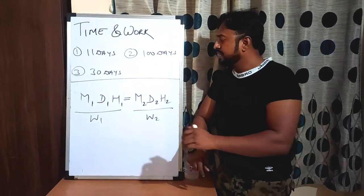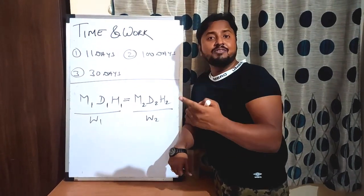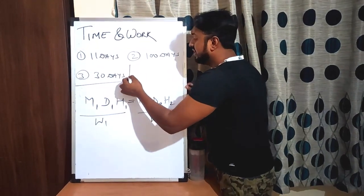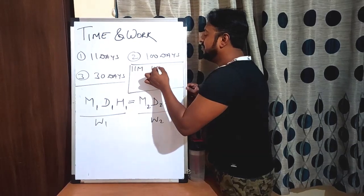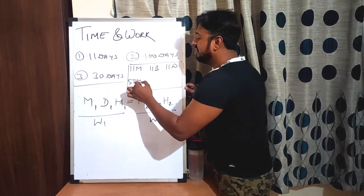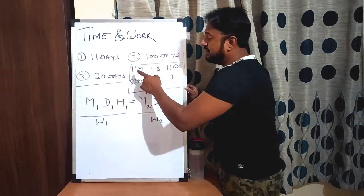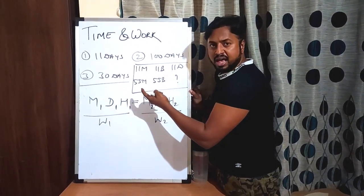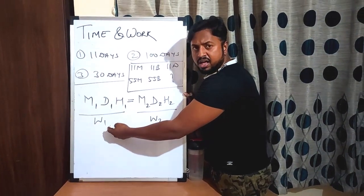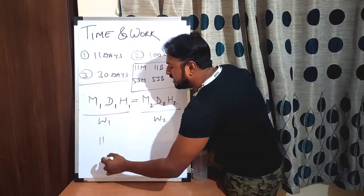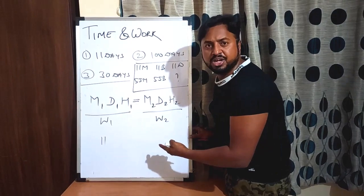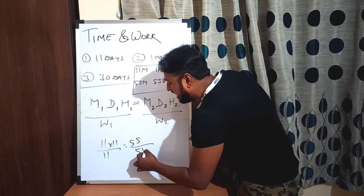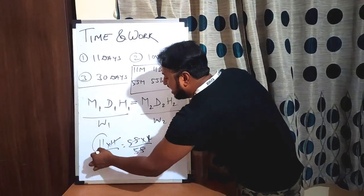Let me apply the formula. First question: 11 men, 11 books, 11 days — 55 men will write 55 books in how many days? M1 = 11, D1 = 11, H1 is not given, W1 = 11 books. M2 = 55, D2 = X, W2 = 55 books. Solving gives D2 = 11 days. That is the correct answer.